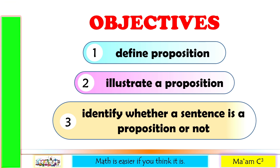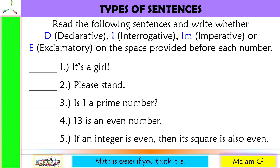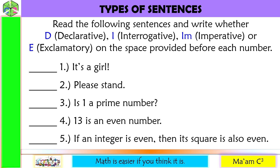Let's have a quick review about types of sentences. Read the following sentences and write whether D for declarative, I for interrogative, Im for imperative, or E for exclamatory. Number one: 'It's a girl!' — this is E, exclamatory. Notice the exclamation point here.